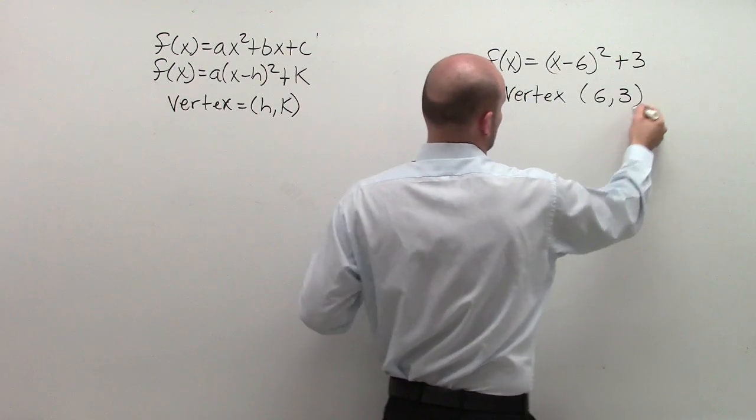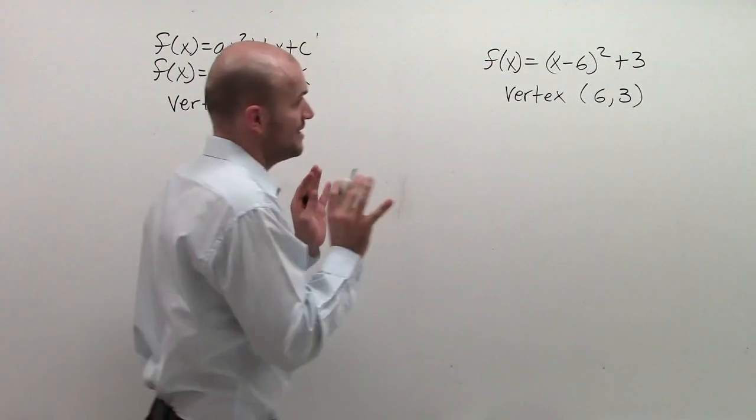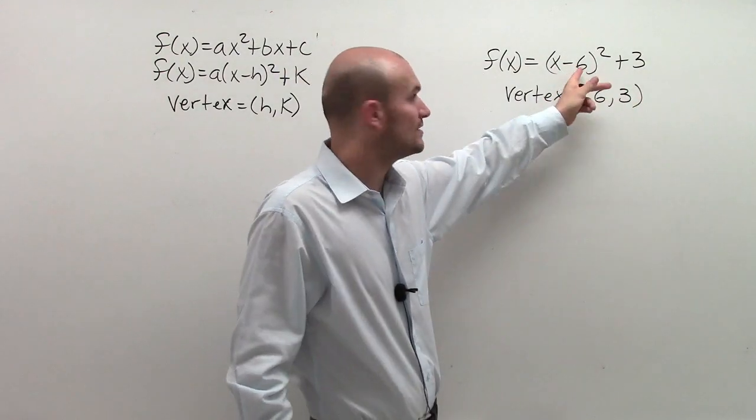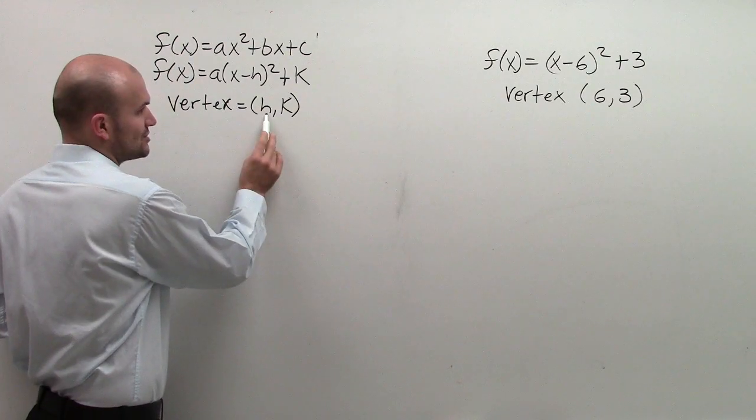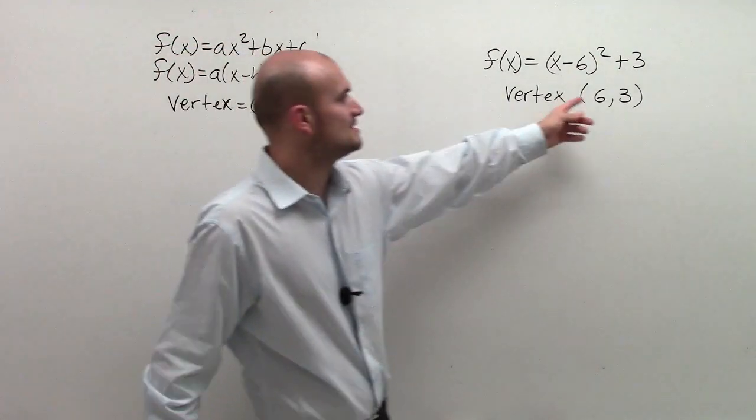It's very fast, very easy. The main important thing to understand is a lot of students want to say it's negative 6 for your vertex, but remember if vertex was h, then inside the parentheses it's x minus h. So if this is 6, it's going to be x minus 6. Very important point to note.